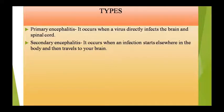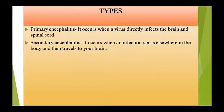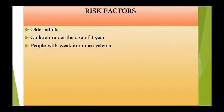Encephalitis दो types की होती है — primary और secondary। Primary encephalitis तब होता है जब brain या spinal cord में virus का direct infection हो जाए। और अगर infection body में कहीं और हुआ था और फिर travel करता हुआ brain तक पहुंच गया, तो उसको secondary encephalitis कहते हैं।